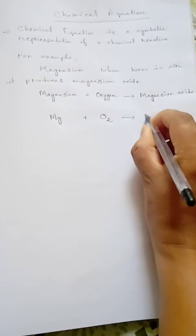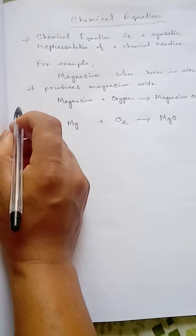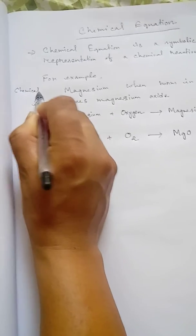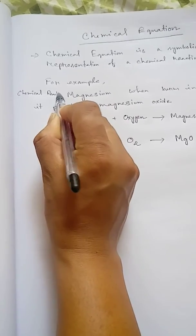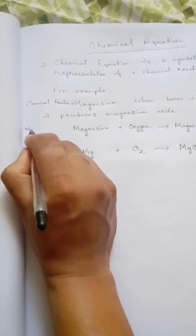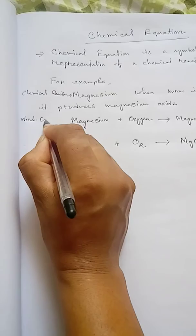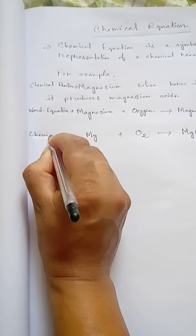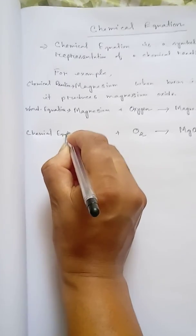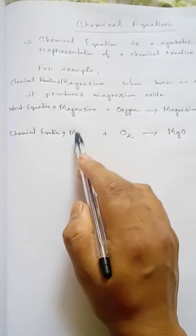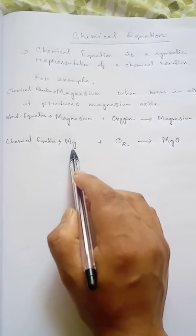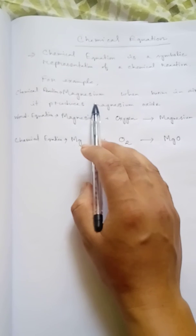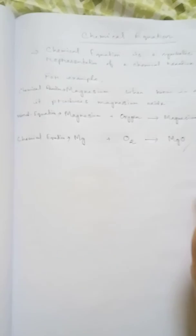So this gives us magnesium oxide. We can call this the chemical reaction, and this is what we call the chemical equation — the symbolic representation of this chemical reaction. So you have to remember all of this. Thank you.